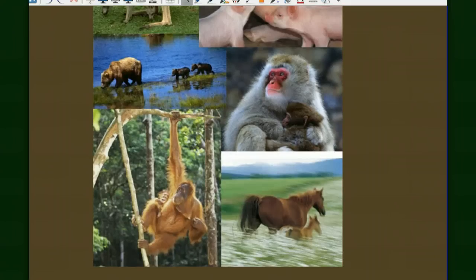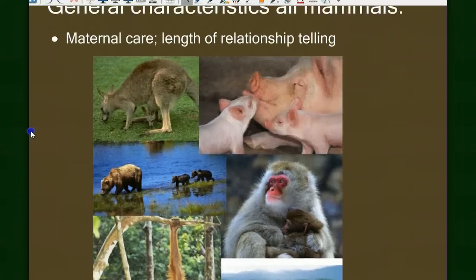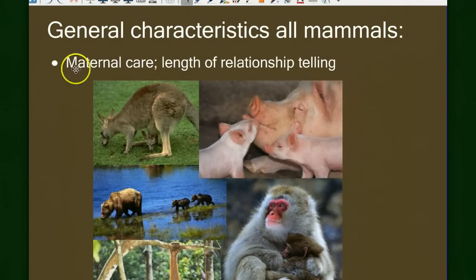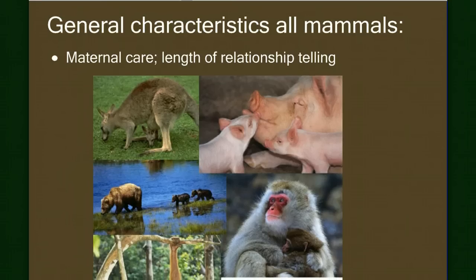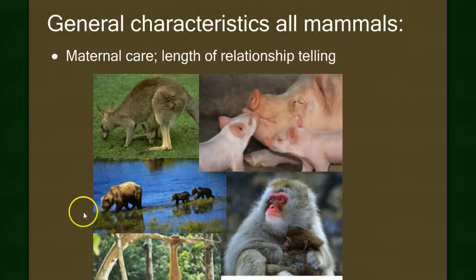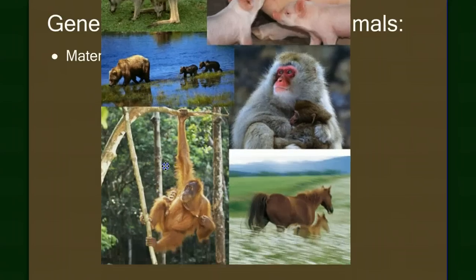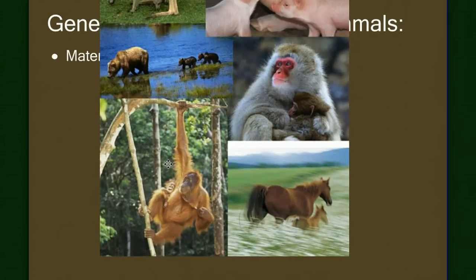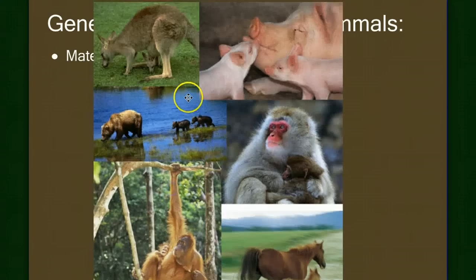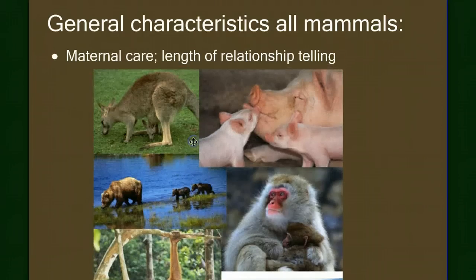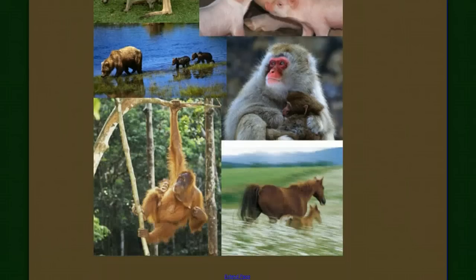The length of maternal care is interesting — it seems the larger the animal, the longer the maternal care lasts. For a rodent, the mother may care for the young for only a matter of weeks. For elephants, it may be many years. And in humans, it takes on a whole different type of relationship that can last many, many years.